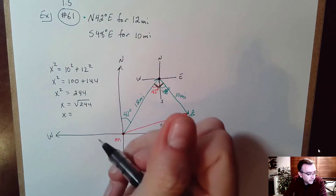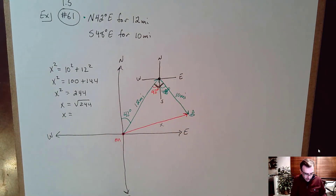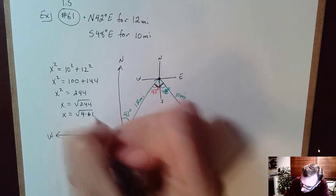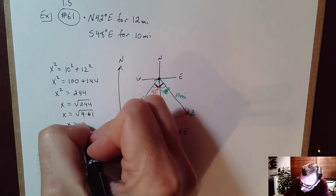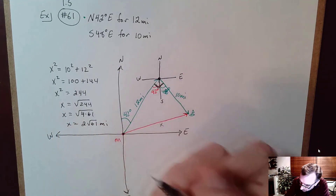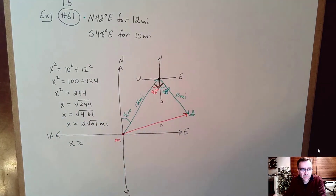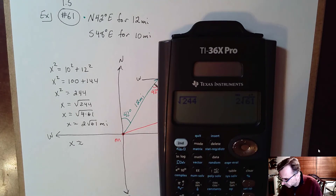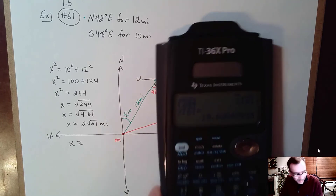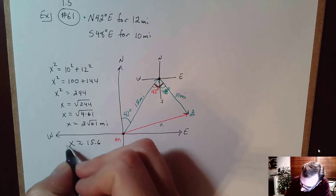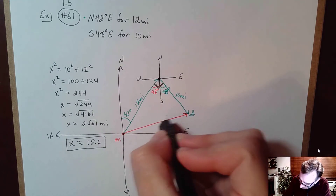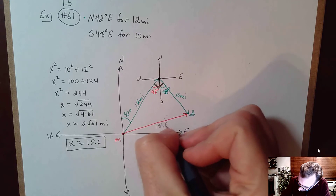Now, 244 is 4 times 61, so X equals 2 square root of 61 miles. On a calculator, 2 square root of 61 gives approximately 15.6 miles. That's the distance — the boat is about 15.6 miles from the marina.